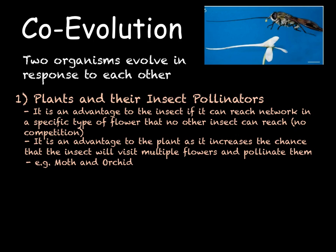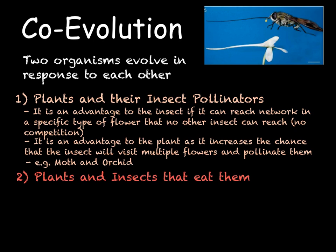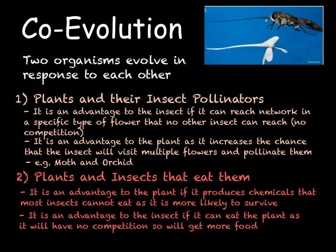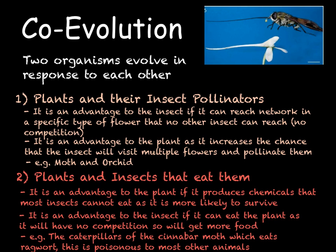Secondly, we have a parasitic relationship where the two organisms are trying to outcompete each other — in this case plants and the insects that eat them. It is an advantage if a plant can produce nasty chemicals so that most insects cannot eat it, helping it to survive. However, it is also an advantage for an insect if it can eat a plant that other insects cannot, as it has access to more food. Therefore, some insects have evolved to eat poisonous plants. For example, the caterpillars of the cinnabar moth are able to eat ragwort, which is poisonous to most other animals, meaning it is the only animal eating that food source and cannot be out-competed. There are many more examples of co-evolution both between plants and animals and between different species.